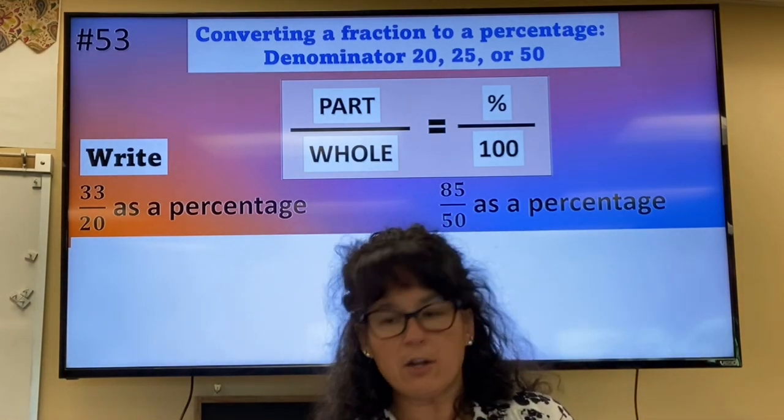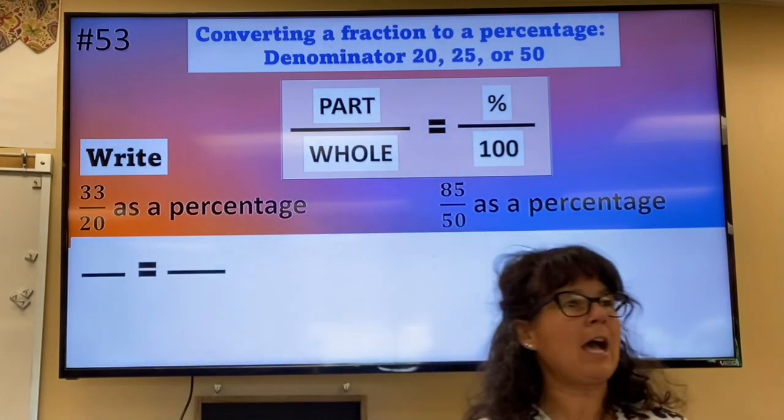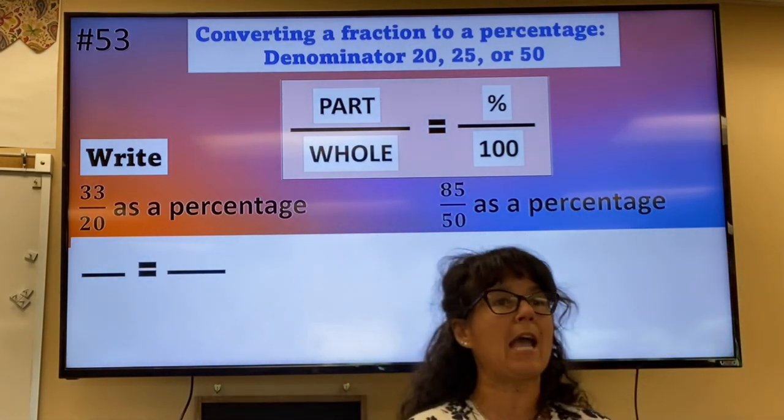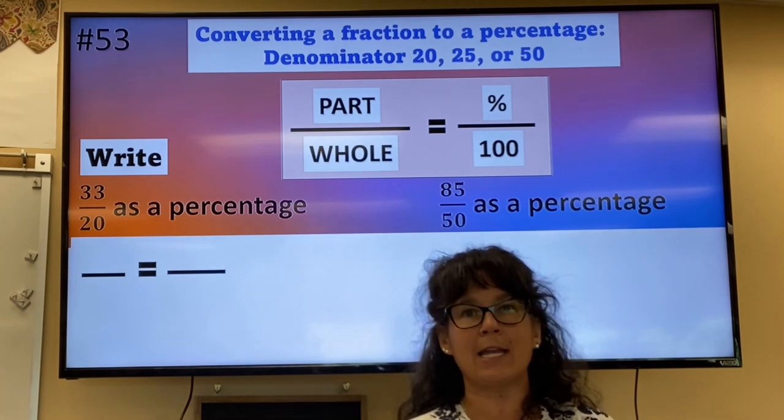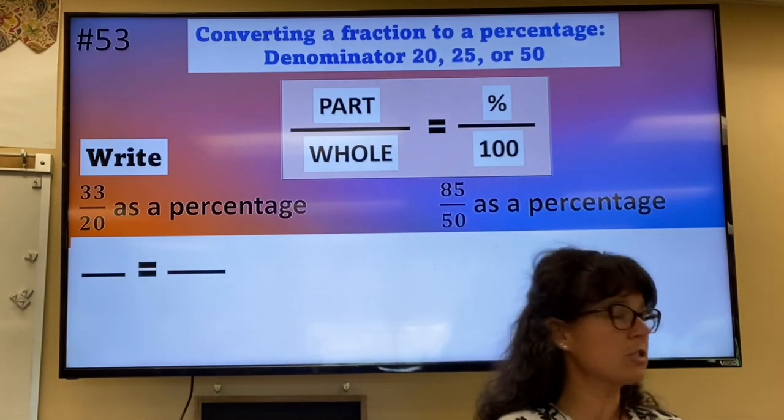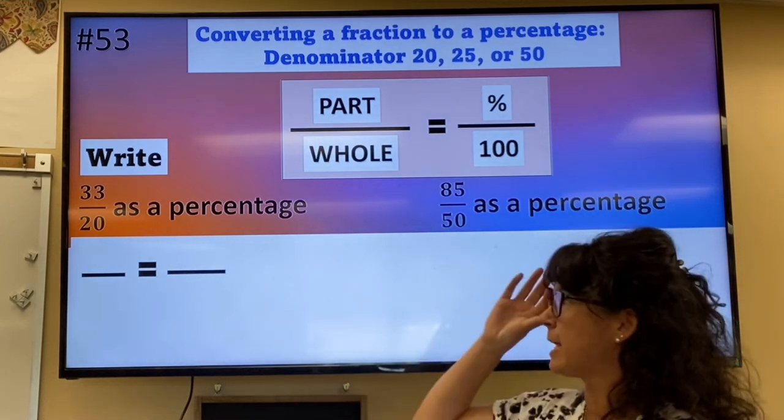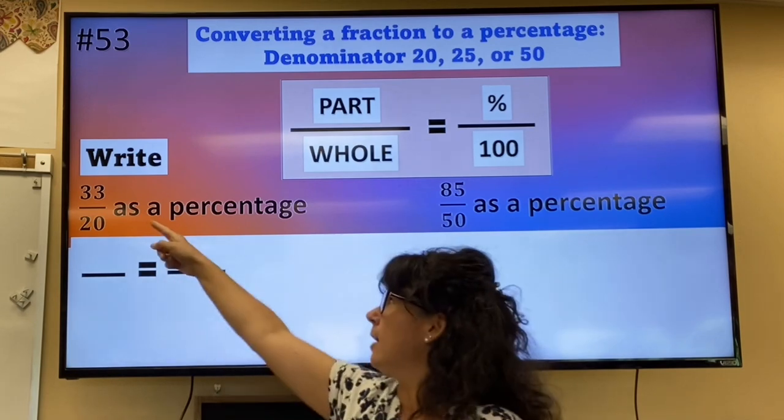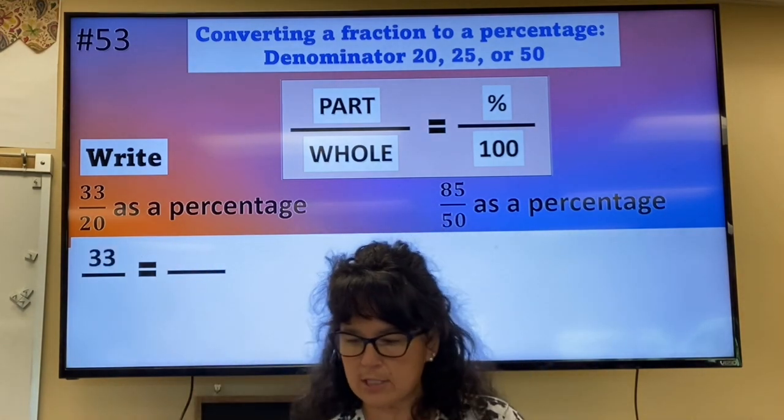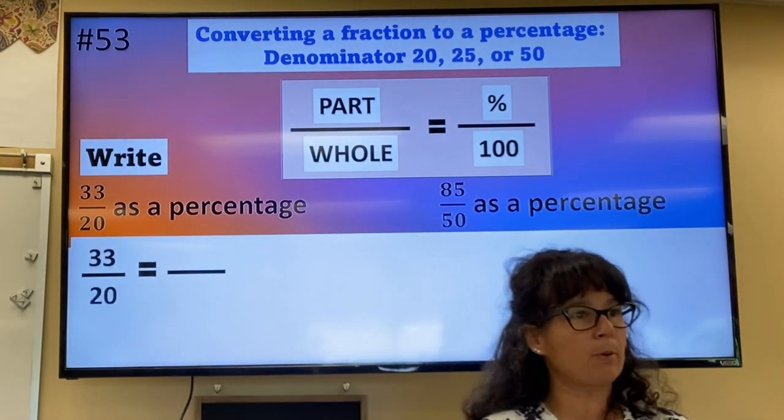33 out of 20. If you think about having a homework assignment, you got 33 out of 20. You got more than 100%. A reasonable answer is going to be over 100%. I would start with making a fraction equal to a fraction. And one of those fractions, 33 over 20, is provided.